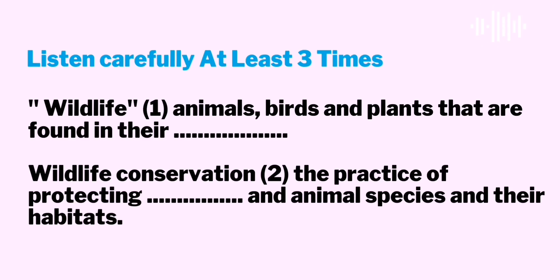Third, we need to educate people about the importance of wildlife, because some people cause harm to them as they are unaware of the importance of wildlife. Next, I'll explain how we can maintain the number of wildlife in balance with their habitats. As habitat destruction is the main threat to wildlife, cutting down forest trees should be prohibited, and planting more trees should be encouraged.